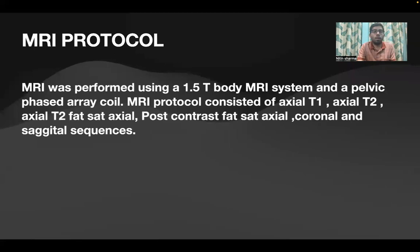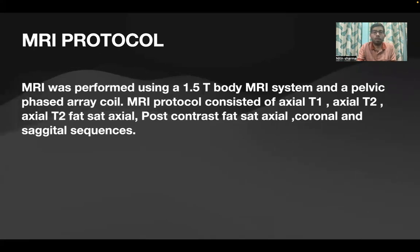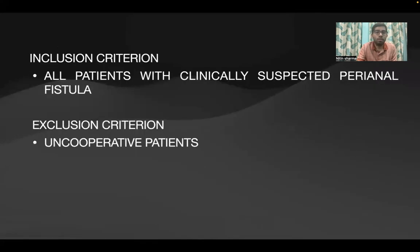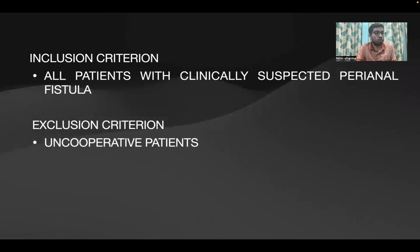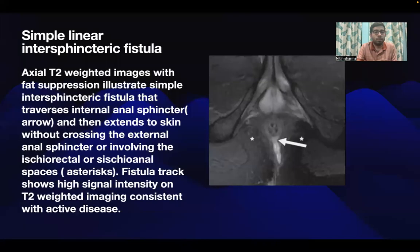MRI was performed using a 1.5 Tesla body MRI system with a pelvic phased-array coil. The MRI protocol consists of axial T1, axial T2, axial T2 fat-sat, axial post-contrast fat-sat, and axial STIR sequences. Inclusion criteria were all patients with clinically suspected perianal fistula; exclusion criteria included uncooperative patients.